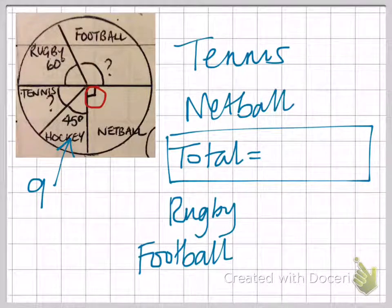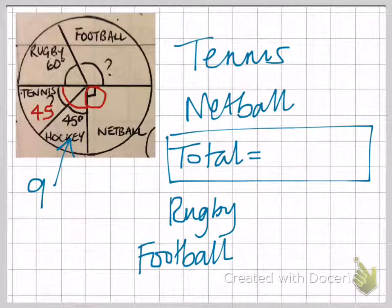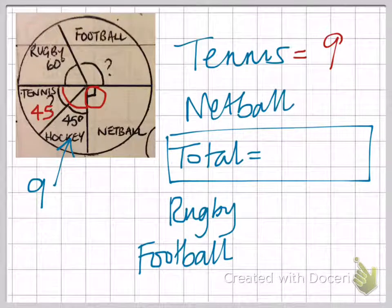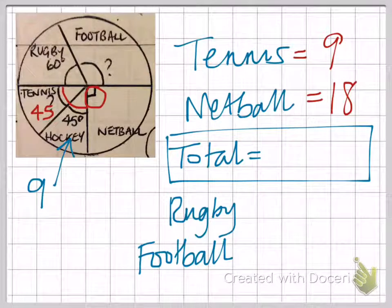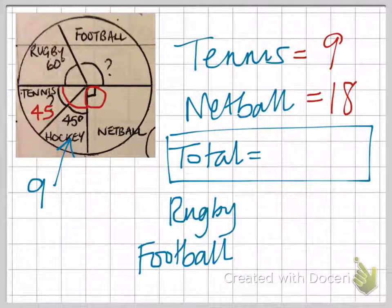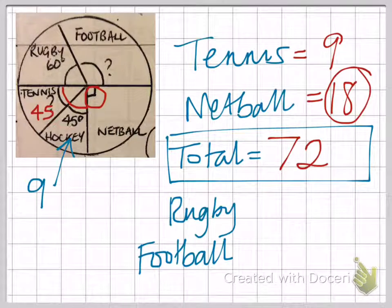If this one's a right angle, then these two must add up to a right angle as well. They're both the same — both 45 degrees. So if nine children like hockey, we can therefore say nine children like tennis. Netball is a right angle, basically double the hockey amount, so that will give us 18. From there, we can work out the total: since netball is a quarter, if we times 18 by four, we've got a total of 72 children.